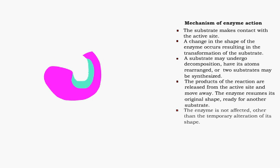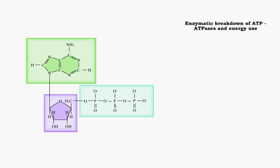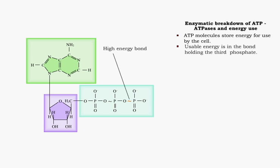The enzyme is not altered in this process except for the change in its shape. ATP or adenosine triphosphate is a molecule that stores energy that can be used by the cell. The usable energy is stored in the bond holding the third phosphate. This bond is formed during the processes of cellular respiration.